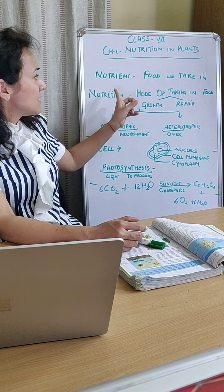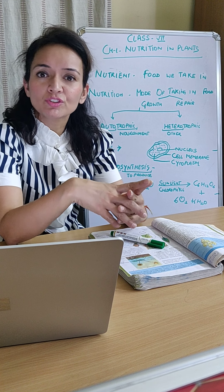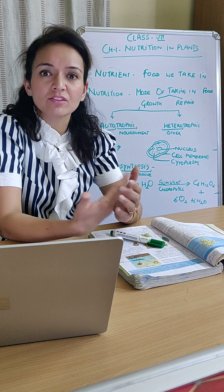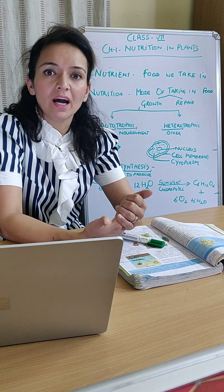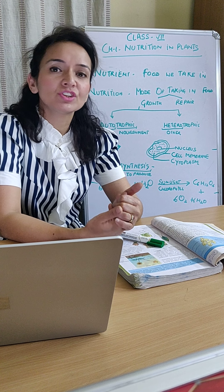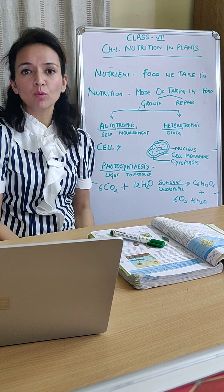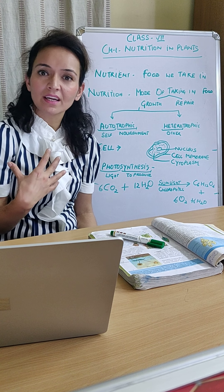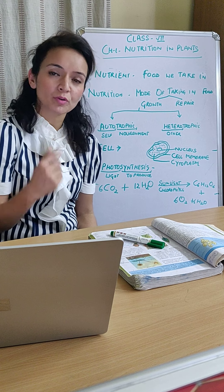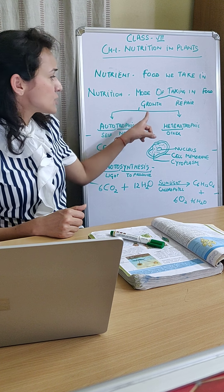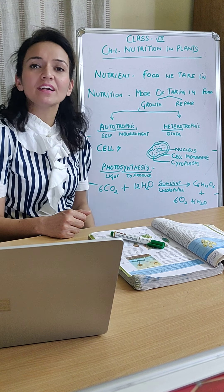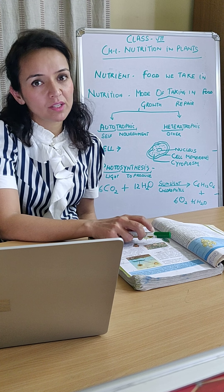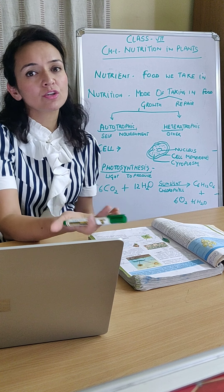Number 1, you must know what nutrients are. A nutrient is a food that we take in - the food that provides energy and has all the required components. And what is nutrition? Nutrition is the mode of taking in food by an organism. The food we take in is used for two processes: number 1, growth of the body, and number 2, repair of worn out parts of the body.